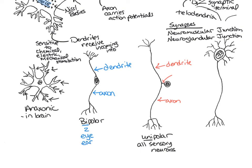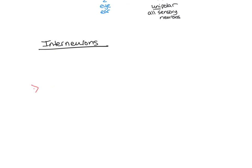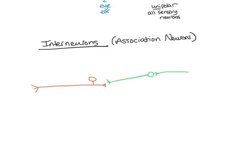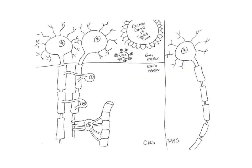Interneurons, also known as association neurons, are mostly located within the brain and spinal cord, between sensory neurons and motor neurons. The more complex the response to a given stimulus, the greater the number of interneurons between sensory and motor neurons. Neuroglia are supporting cells found in both the central and peripheral nervous systems.